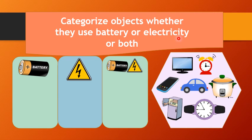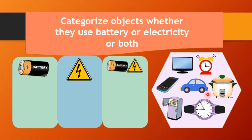Now, let us categorize objects whether they use battery or electricity, or both battery and electricity. TV, clock, cellphone, car, rice cooker, refrigerator, and a wristwatch. Categorize objects whether they use battery or electricity, or both battery and electricity.